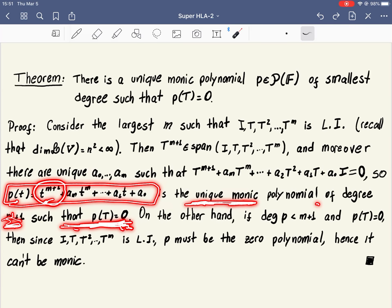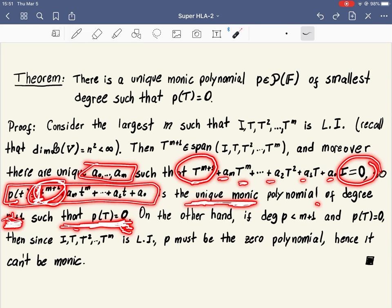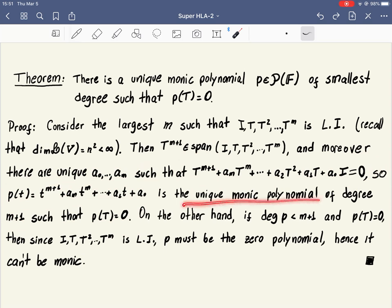And why is it the unique one? Well, because if there is another one which has degree M plus 1 and which is monic, then necessarily it has coefficients 0 here, 1 here, in front of T^(M+1), which means this 1 that we have here. And we already know that the other coefficients will have to be unique, because there is no other way to get the 0 here. So we found the unique monic polynomial of degree M plus 1.